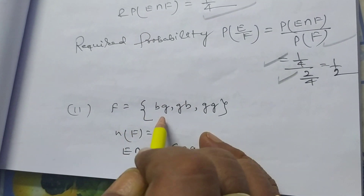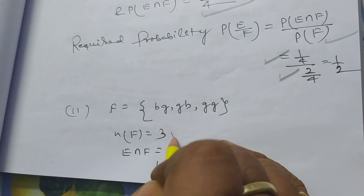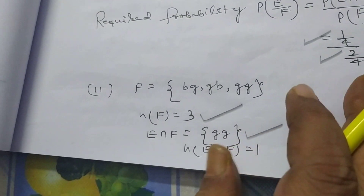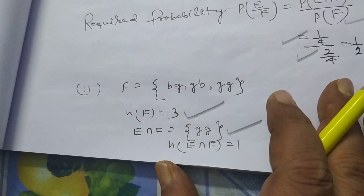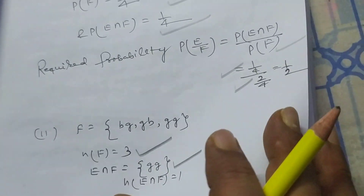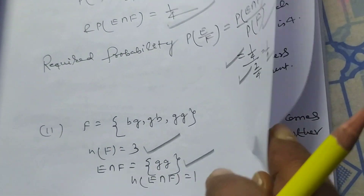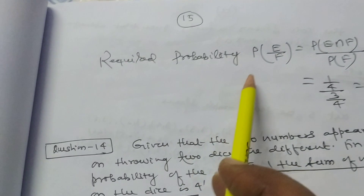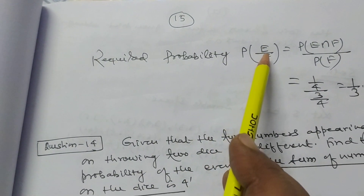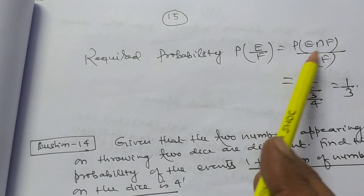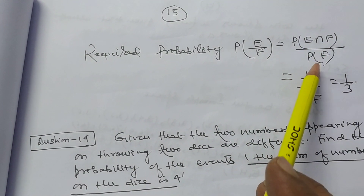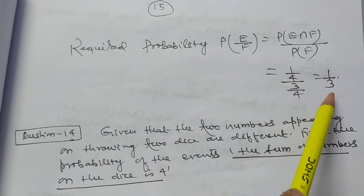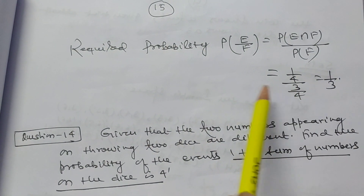Let F = {BG, GB, GG}, so the cardinal number of F is 3. E∩F = {GG}, so the cardinal number of E∩F is 1. The required probability P(E|F) = P(E∩F)/P(F) = (1/4)/(3/4) = 1/3.